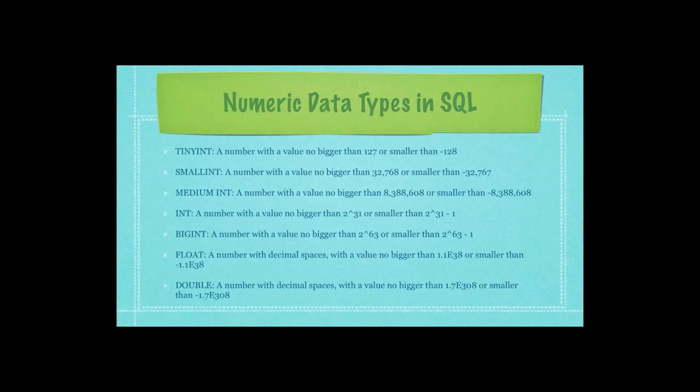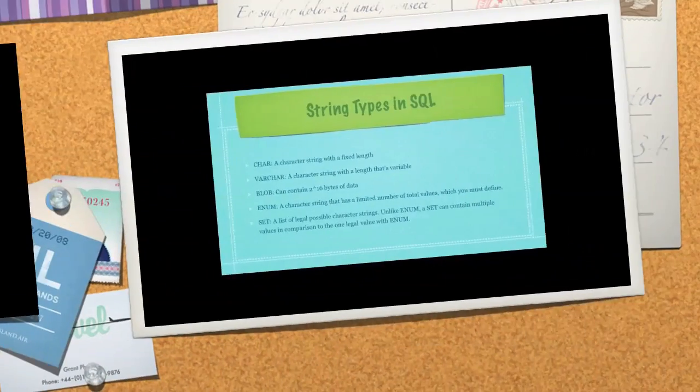So what type of numeric data types are there in SQL? Well, you can see all of them right here. I'm not going to bother going through all of them. Pause your movie and look at them as you like. But it's basically integers are numbers without decimal places. And then you have floats and doubles, which do allow for decimal places.